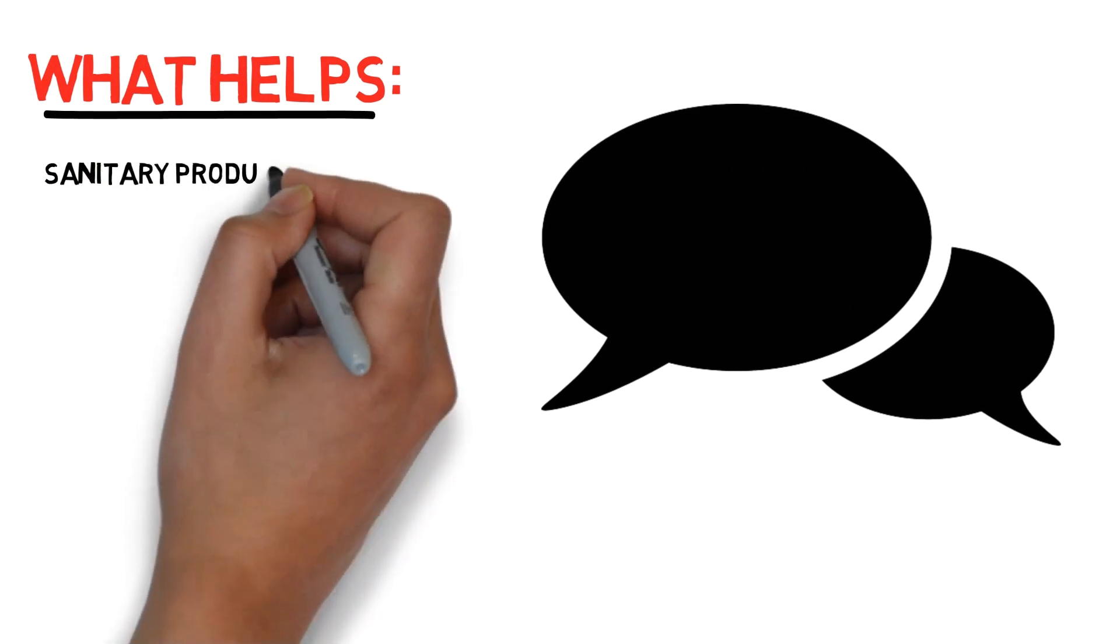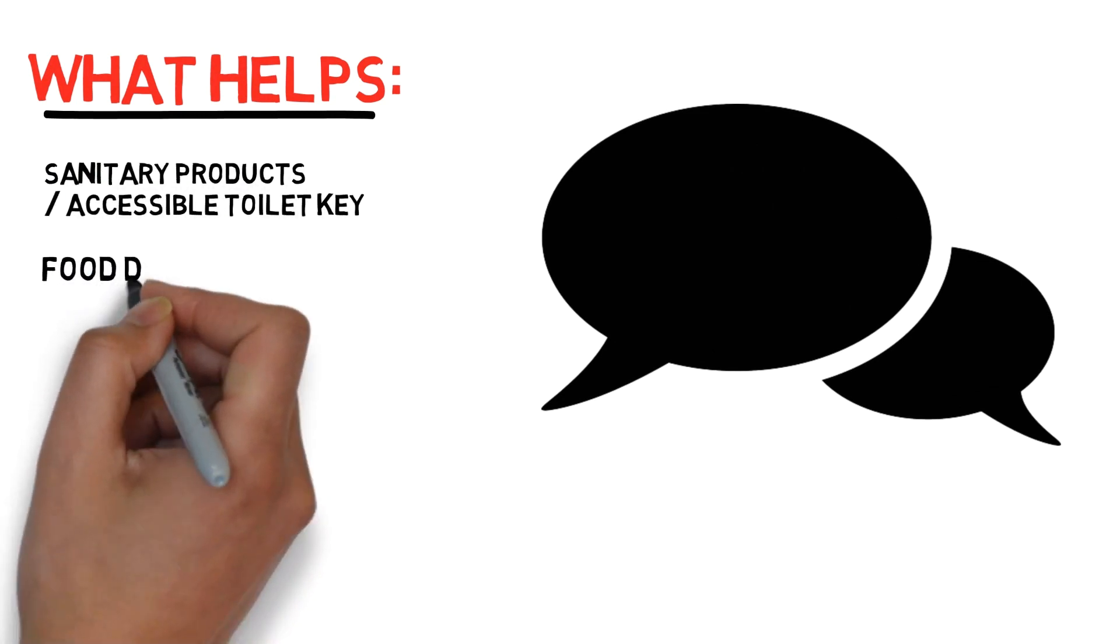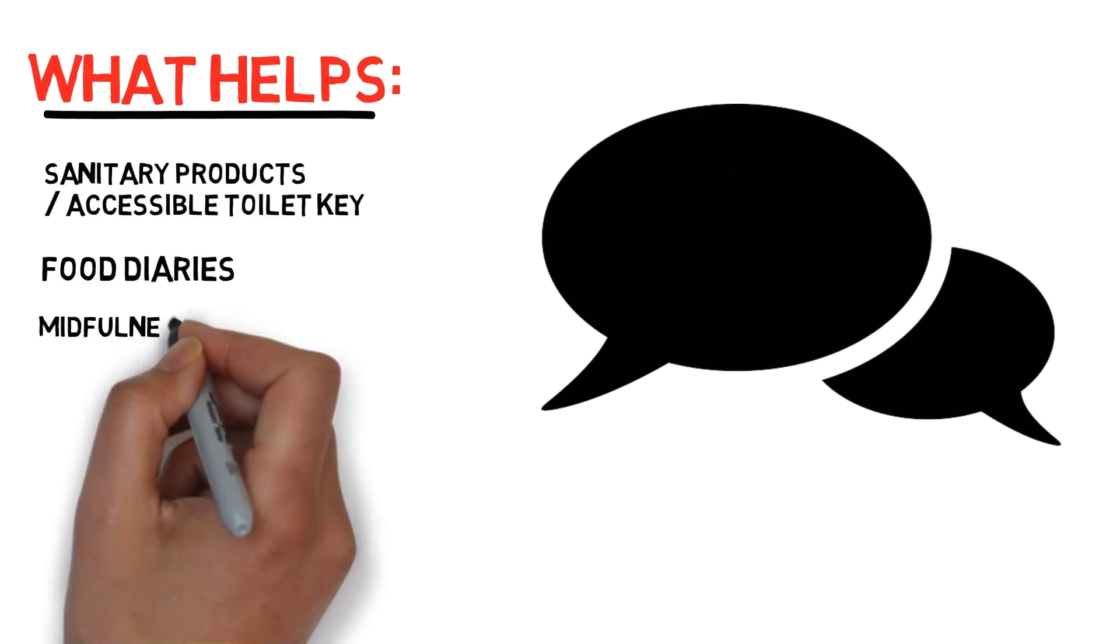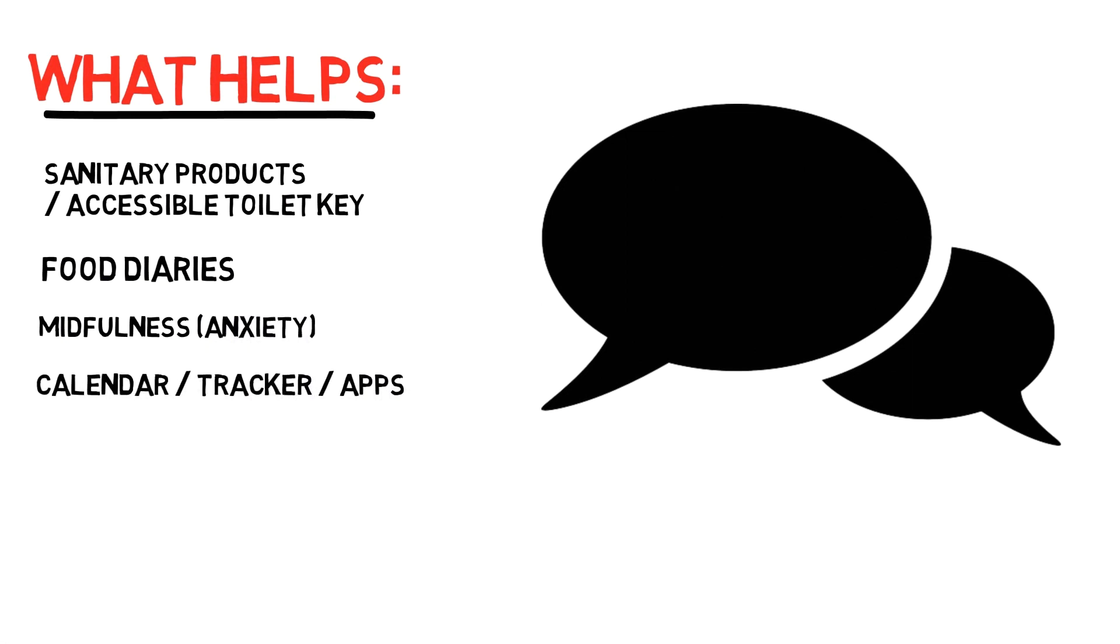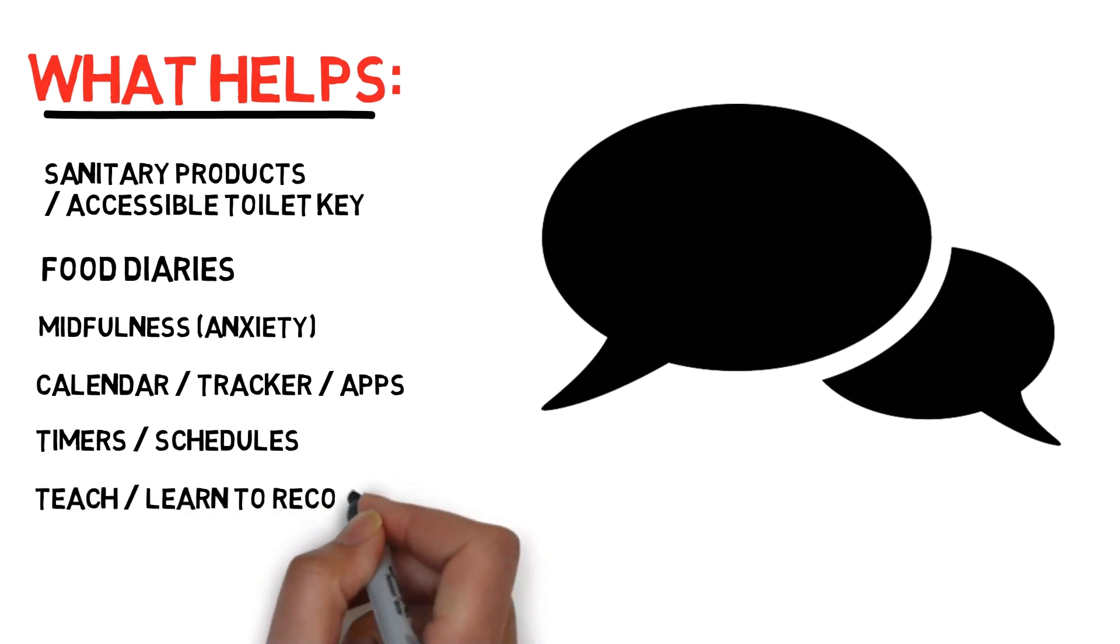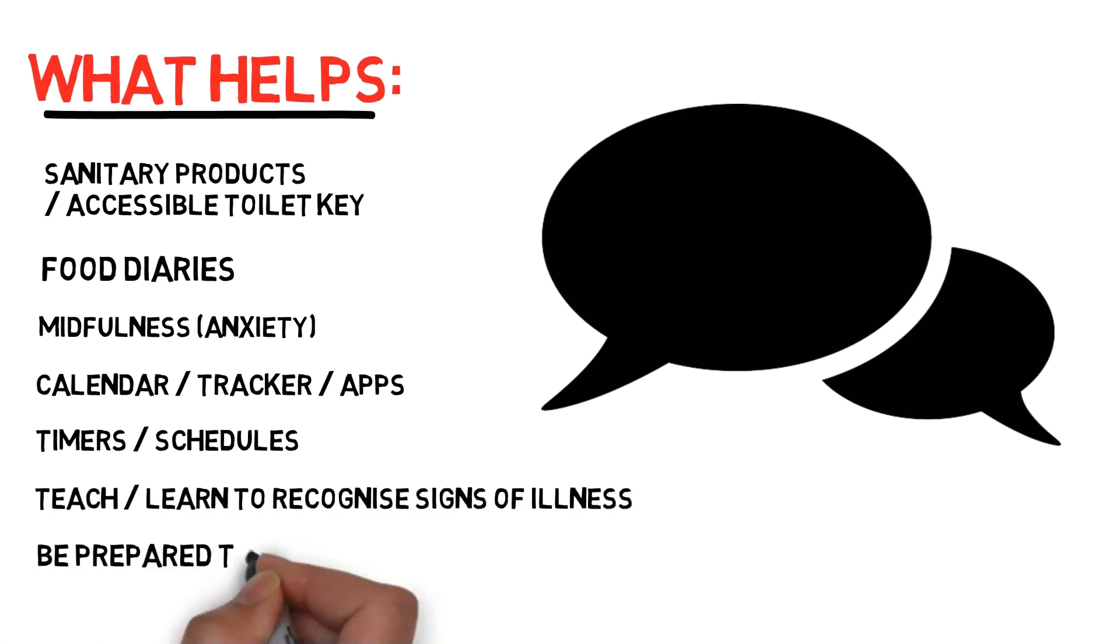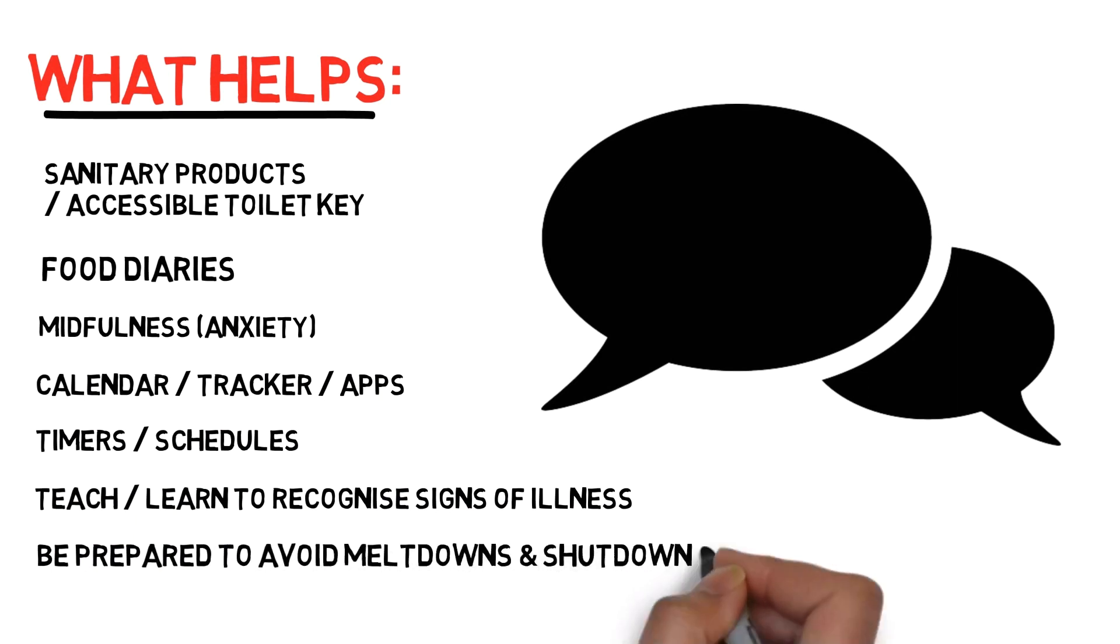What helps? Sanitary products, food diaries to let you know what's causing problems, mindfulness for anxiety, calendars, trackers and apps for other bodily sensations, timers and schedules to let you know when to eat, learning to recognize the signs of illness so that you don't have to worry as much, and be prepared so as to avoid meltdowns and shutdowns for those unmet needs.